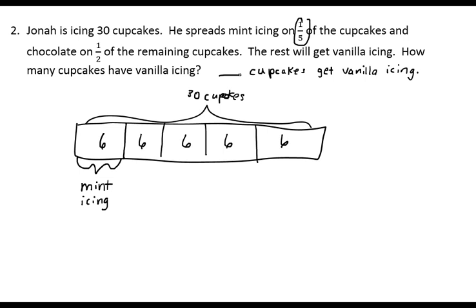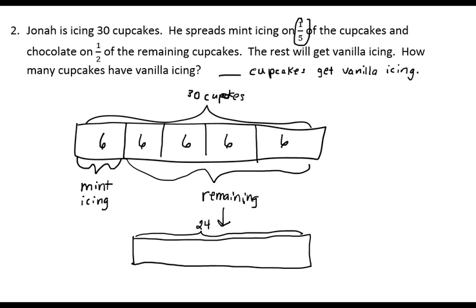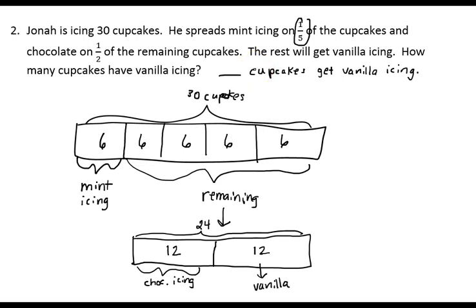The next part says one-half of the remaining cupcakes will have the chocolate. This part of the tape would be the remaining cupcakes, and I'm going to redraw that down below. Since there are four sections with six in each section, I now have 24 cupcakes that are left. Half of those will get chocolate icing, so if I split the 24 in half, that means 12 will get the chocolate icing. The leftovers will get the vanilla icing — so that means there are 12 cupcakes that get the vanilla icing.